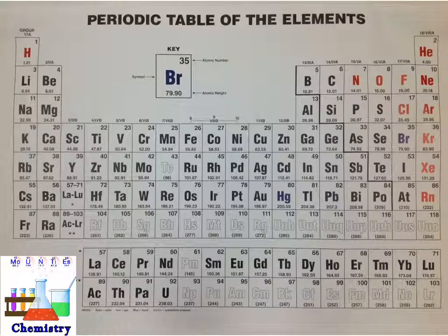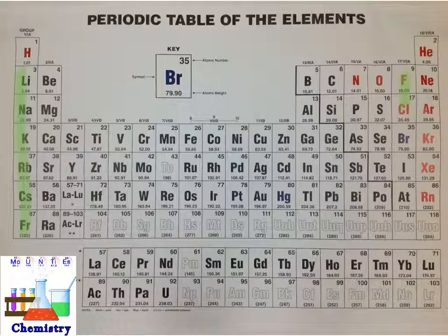The periodic table is organized into columns, which are also referred to as groups or families. The families usually have a name associated with them. Lithium through francium, for example, is the alkali metal family. Fluorine through astatine is the halogen family.